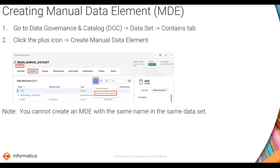To create a manual data element, go to the Data Governance and Catalog, navigate to the data set and go to the Contents tab, where you will see a plus icon. Once you click it, you can create a manual data element. Note that you cannot create a manual data element with the same name in the same data set.